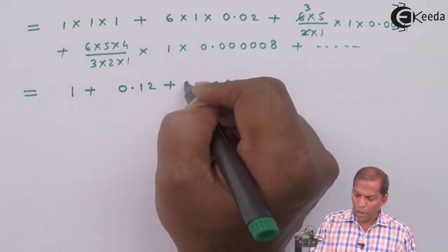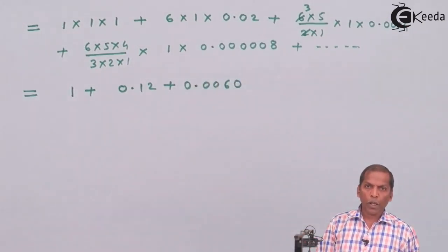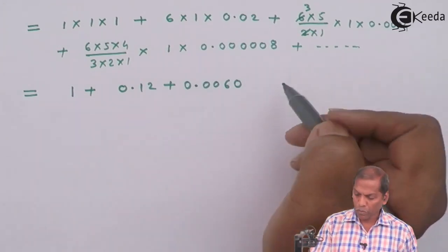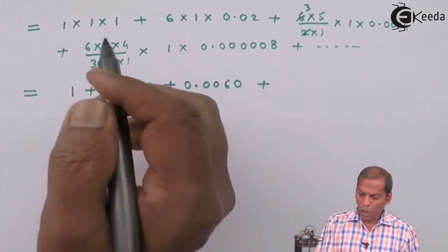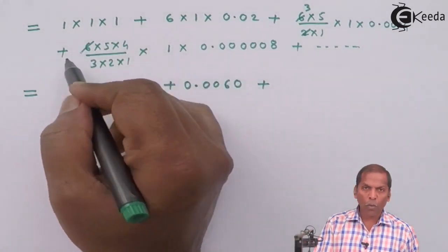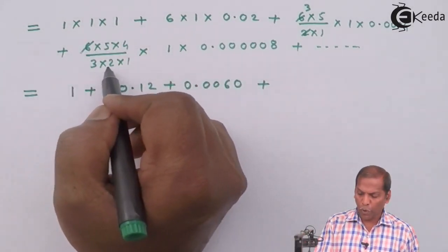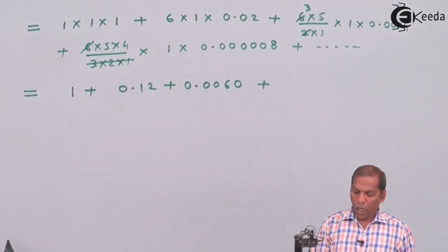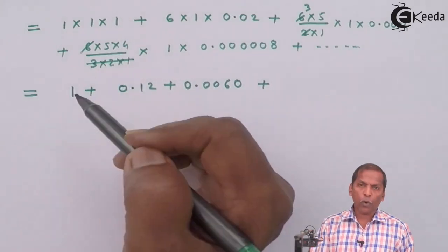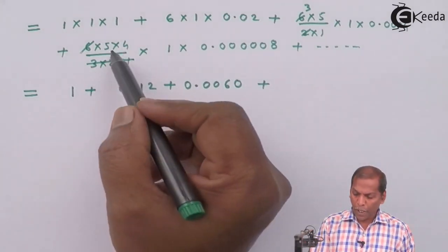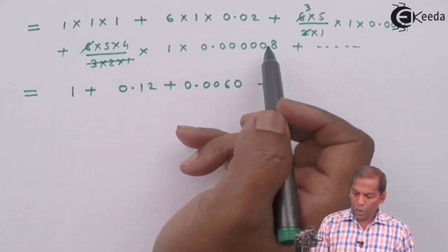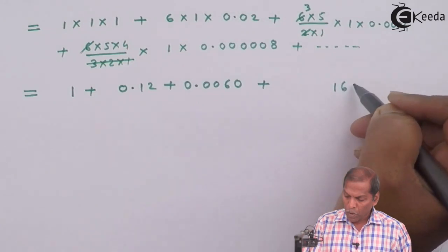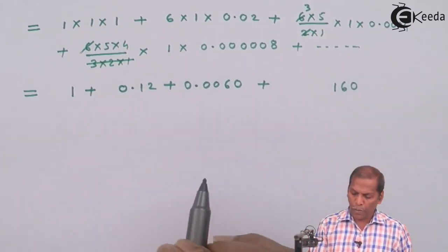But here we have to put decimal after 4 digits, so this part gives us 0.0060. Then plus here we cancel 6 from numerator and 3 into 2 into 1 that gives 6 from denominator. Now 5 into 4 gives us 20, 20 into 8 gives us 160.